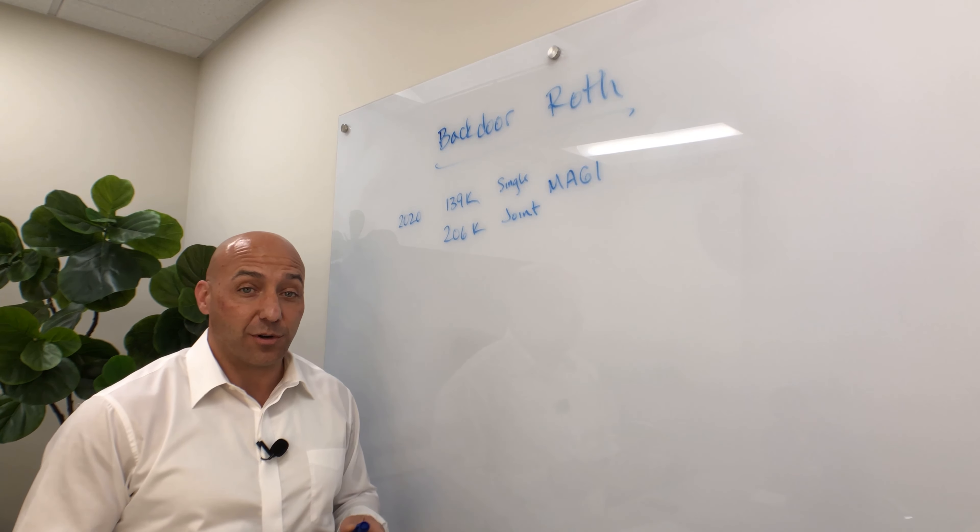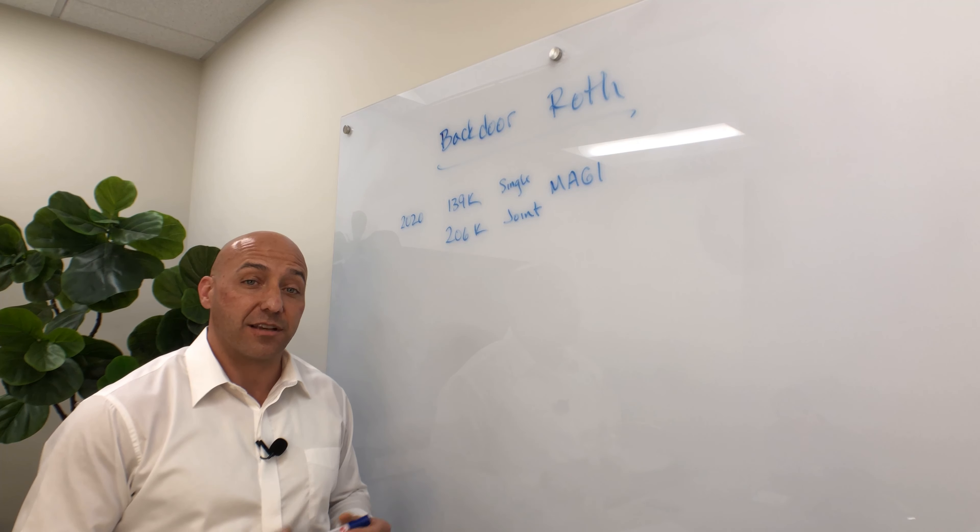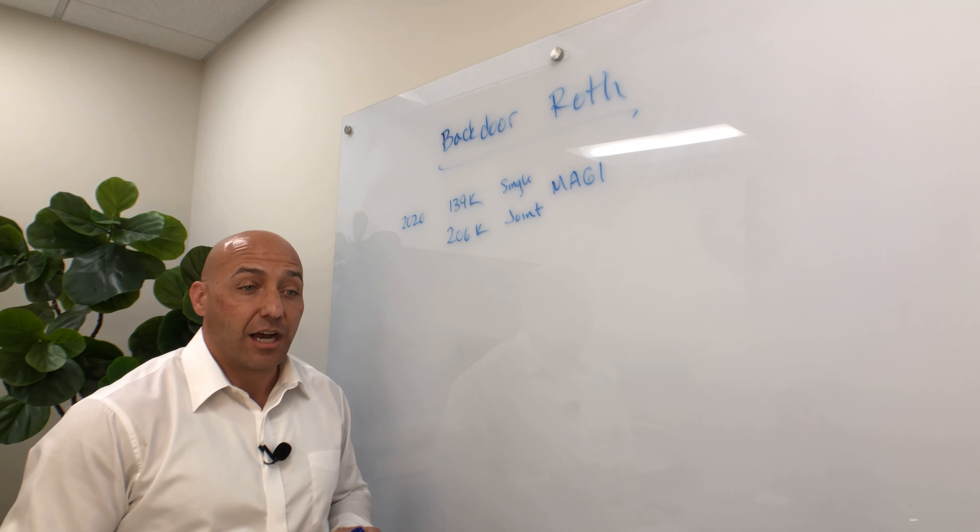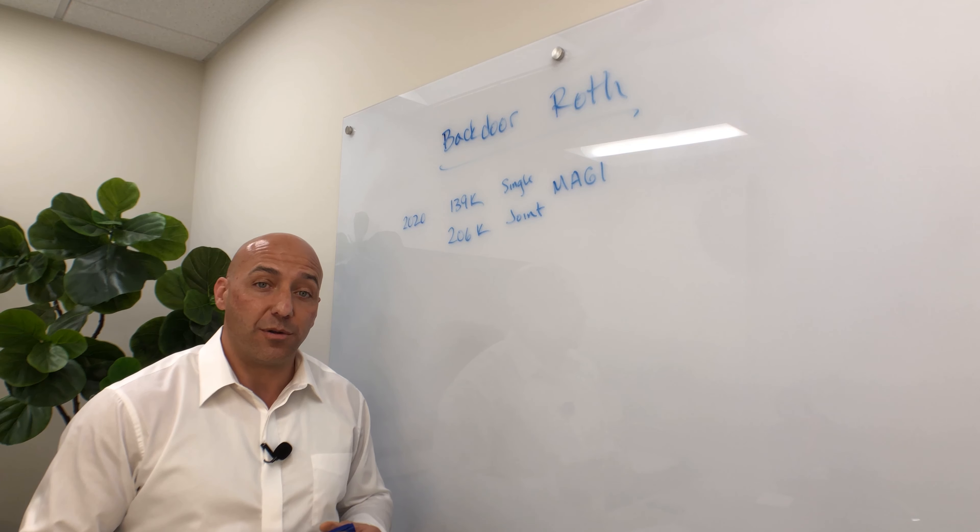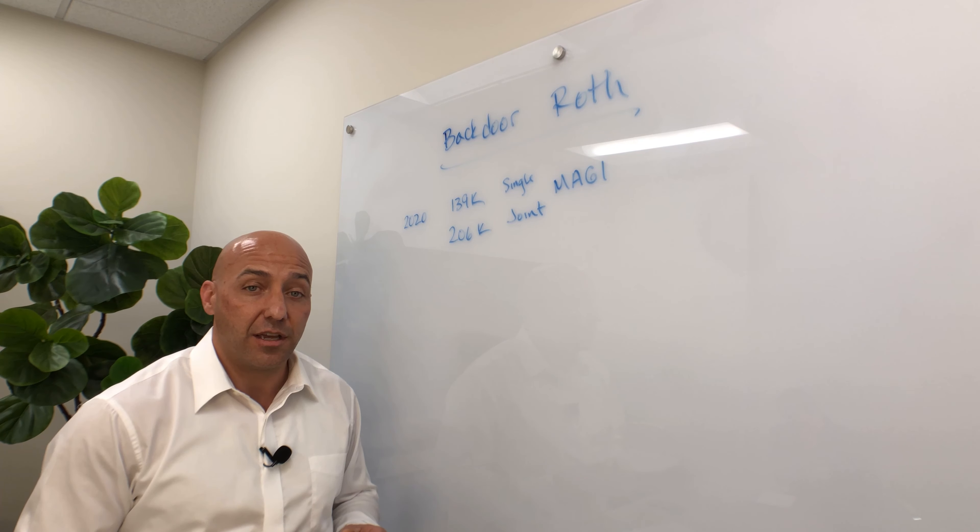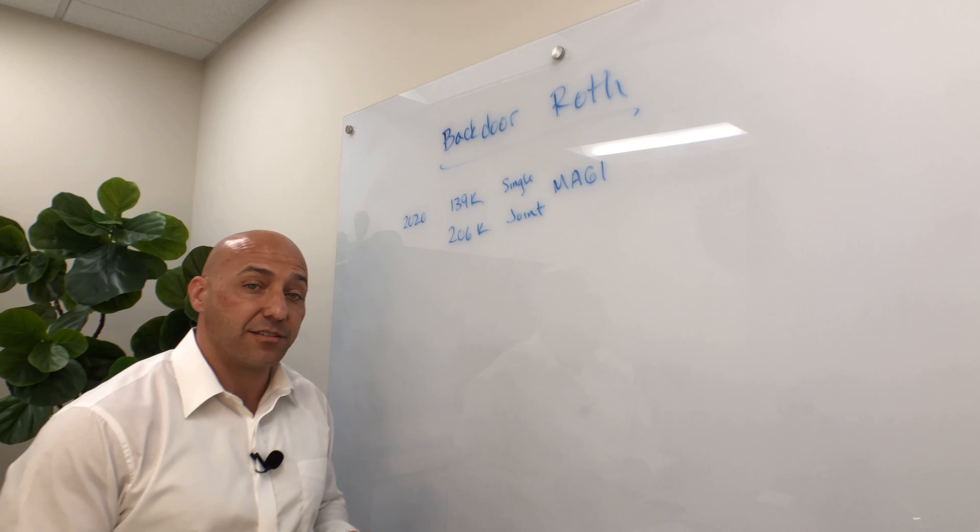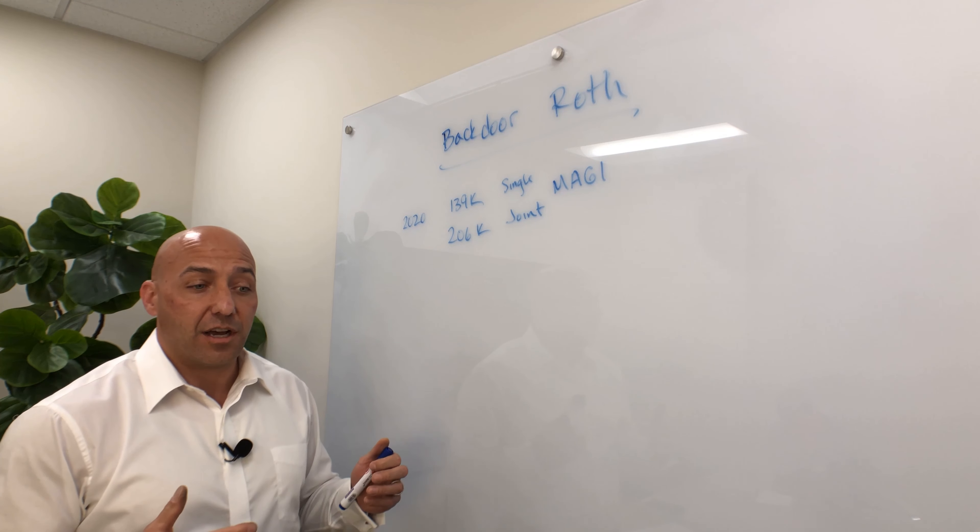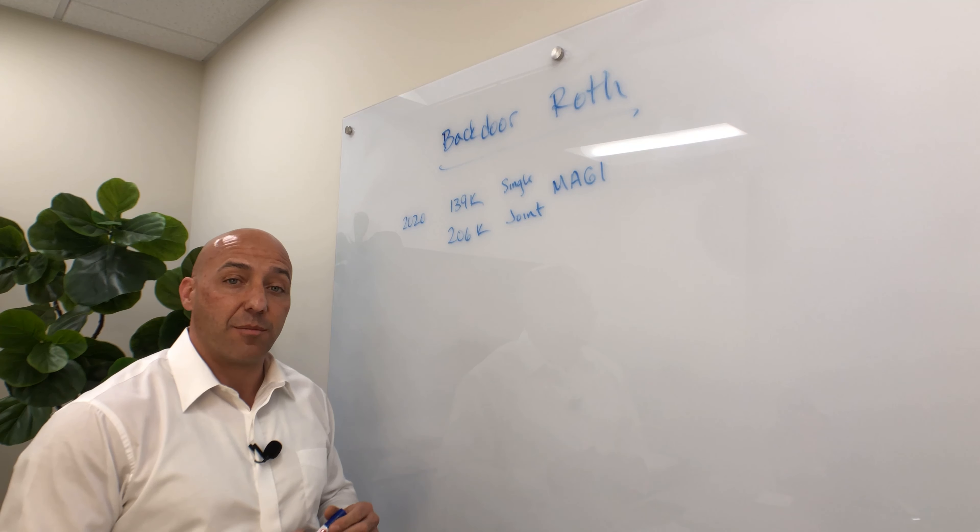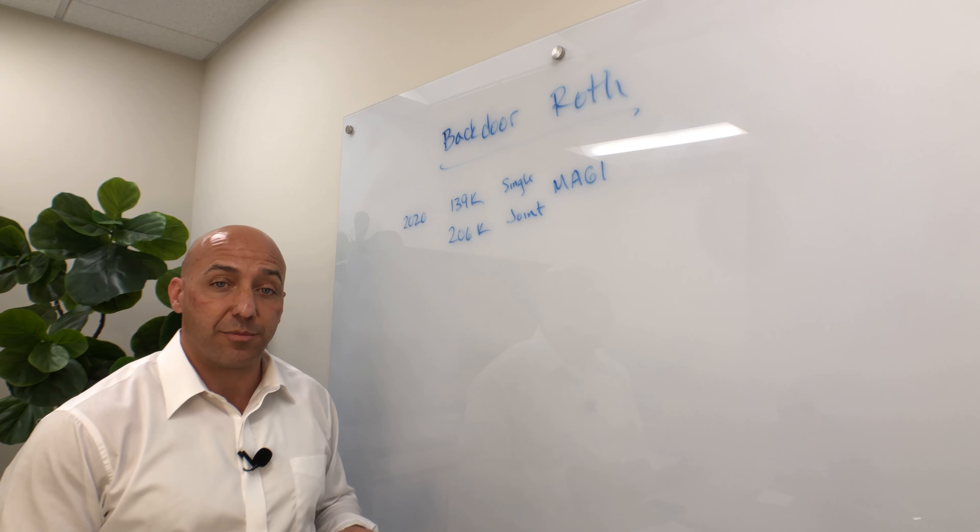It actually is one of my favorite things to do because I love Roth IRAs, and there's a little bit of a tax loophole that gives you an opportunity to get into a Roth IRA if you otherwise wouldn't be allowed. And what I mean by that is that they've given income limits on the amount you can earn and still contribute to a Roth IRA.